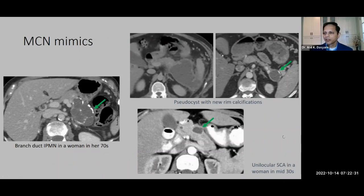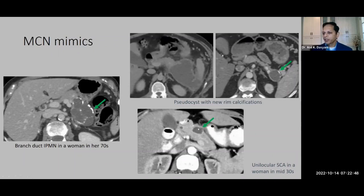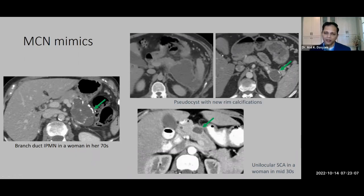Several other lesions can look like MCN. A typical-appearing unilocular lesion in the tail with mural calcifications actually turned out to be a long-standing pseudocyst. A unilocular cystic lesion in the pancreatic body without lobulation turned out to be a unilocular serous cystadenoma in a woman in her mid-30s. Another oligocystic lesion with cystic components greater than 2 cm and rim calcification turned out to be a branch-duct type IPMN — illustrating that several entities can mimic MCN on imaging.